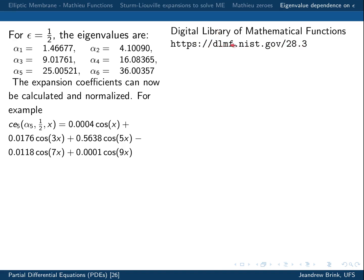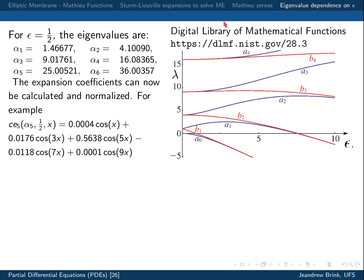A very good reference for solutions to Sturm-Liouville equations is the Digital Library of Mathematical Functions (DLMF), hosted at NIST. It's the online successor to the classic Abramowitz and Stegun reference, containing properties of all the most important Sturm-Liouville equations. Mathieu's equation is covered at Chapter 28.3. The figure shown here — depicting the eigenvalues of Mathieu's equation and their dependence on epsilon — was taken from there.